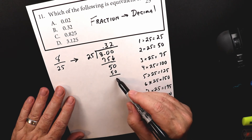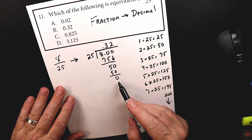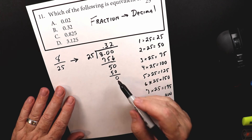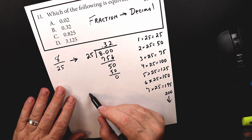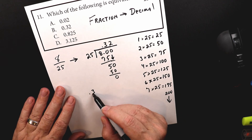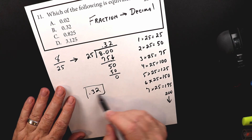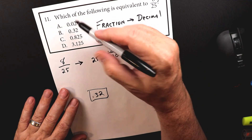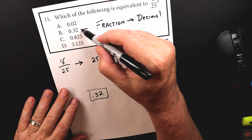When you're doing division, as soon as you get a zero down here, you're done. So the answer is 0.32. I check over the answer choices and there it is, right there.